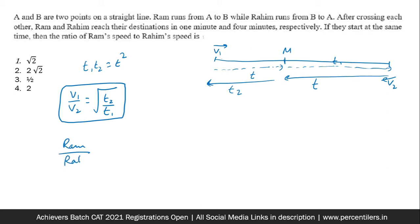Ram and Rahim. Ram took one minute and Rahim took four minutes respectively after the meeting point as mentioned very clearly in the question. So Ram and Rahim's speed is what we are asked, 2 is to 1, so fourth option becomes the clear cut answer to the question. We are done with the second question as well.